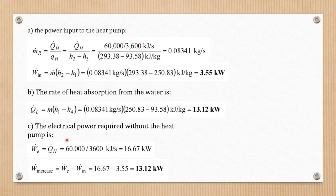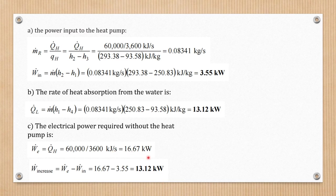After that, we're going to find the electrical power required without the heat pump. The power increase is equal to the electrical power minus the power input. Since the electrical power is not directly given, we find it first: it is equivalent to Q̇_H, which is 60,000 divided by 3,600, giving 16.67 kilowatts. Subtracting our power input, we get an increase of 13.12 kilowatts.